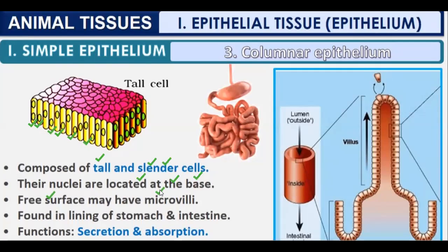Columnar cells may have microvilli on their free surfaces. They are found in the lining of the stomach and intestine. Their function is secretion and absorption — with comparatively more absorption than cuboidal cells. The intestinal villi of the small intestine, lined with blood vessels, absorb nutrients into the blood.